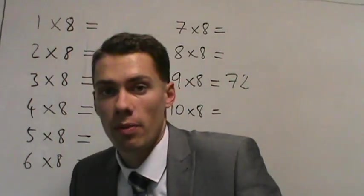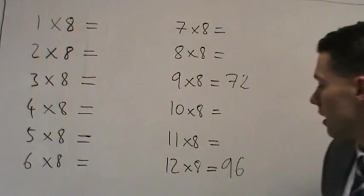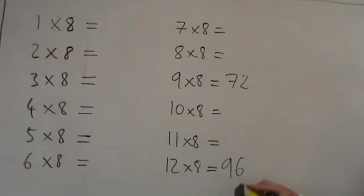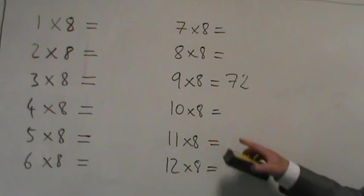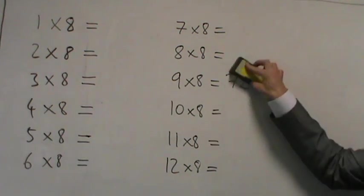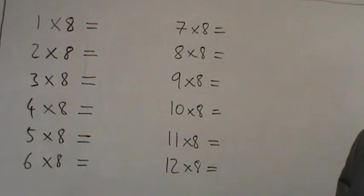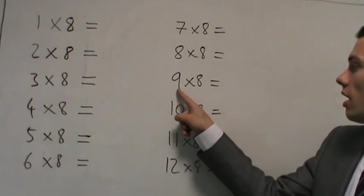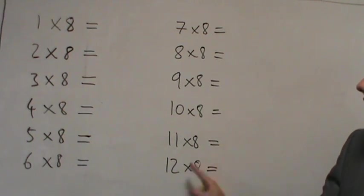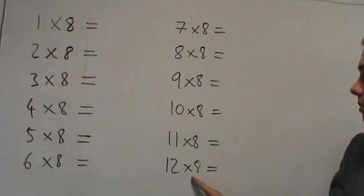So I'm going to rub out the last 2 now. 12 times 8 is 96 and 9 times 8 is 72. So 9 times 8 is 72 and 12 times 8 is 96.